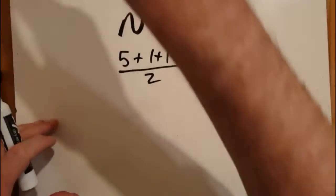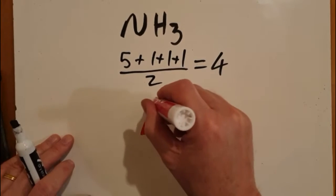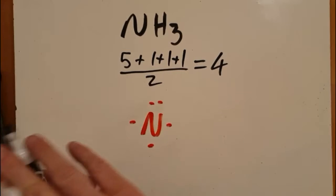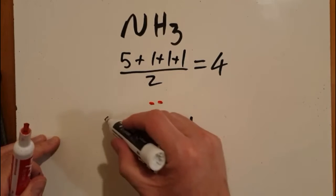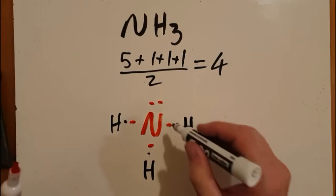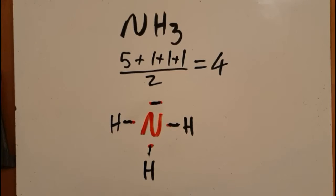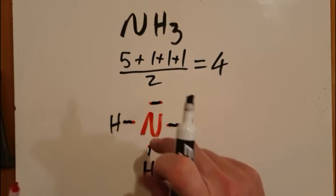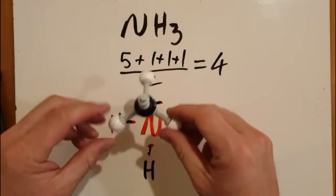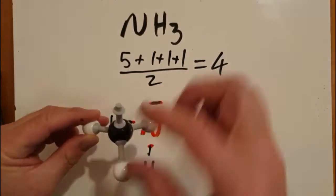Another way to do it: nitrogen is in group 15, so it has five valence electrons — one, two, three, four, five — and hydrogen's in group one, one valence electron. Pair up the electrons using valence-shell electron pair repulsion theory. That gives you the same answer. The central atom has four electron domains and one lone pair, which means it's going to be trigonal pyramidal — a trigonal-based pyramid. So that's the nitrogen with three bonds to the hydrogens and then a lone pair.